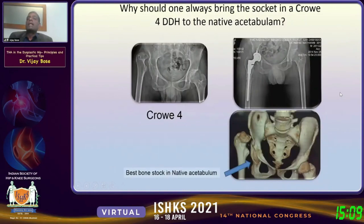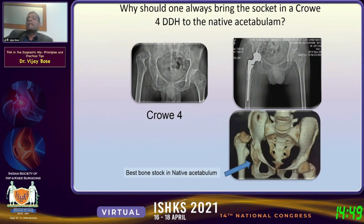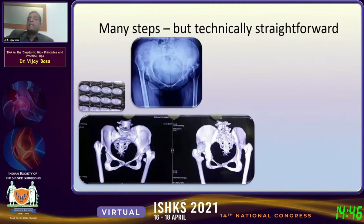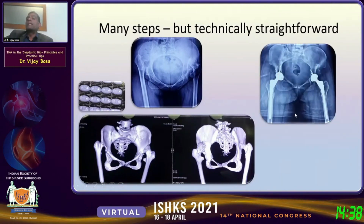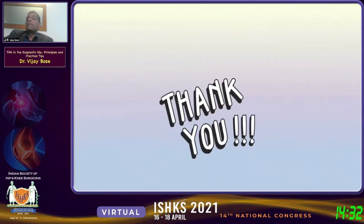Crowe 4 is different — these principles do not apply. In Crowe 4, the best bone according to Wolff's law is not superior but exactly at the native center, so that is where the socket must be placed. In Crowe 1, 2, and 3 the best bone is available superiorly; in Crowe 4 it is at the native center. A classical bilateral Crowe 4 case is shown — the CT scan confirms the best bone is undoubtedly at the true center. This is managed with a subtrochanteric shortening osteotomy on both sides.